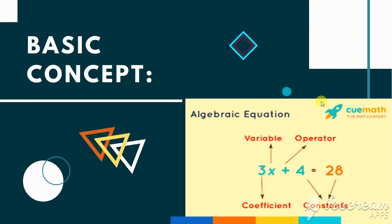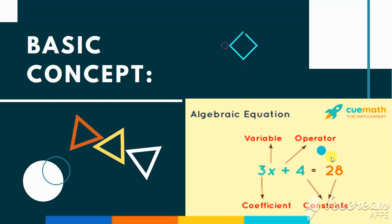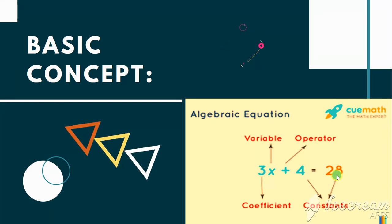This is an algebraic equation. The alphabets are called the variables. The numbers with the variables are called coefficients. And the numbers without the variables are called constants. And the signs are called operators.